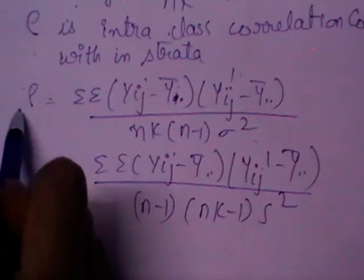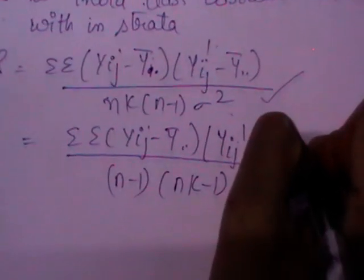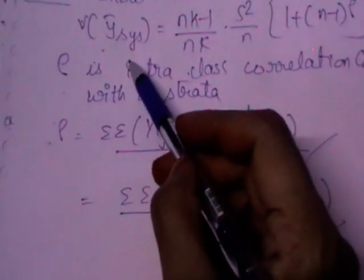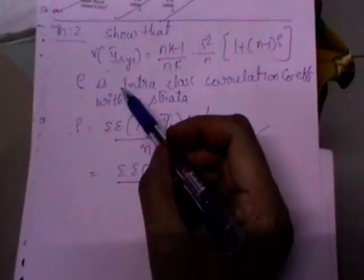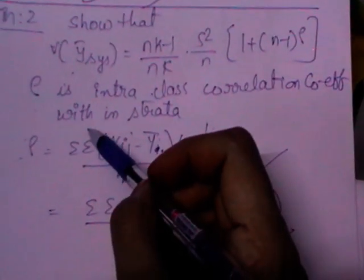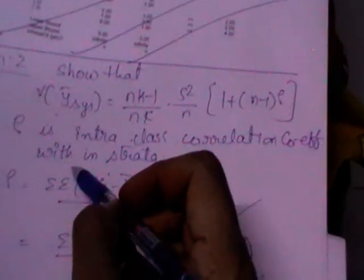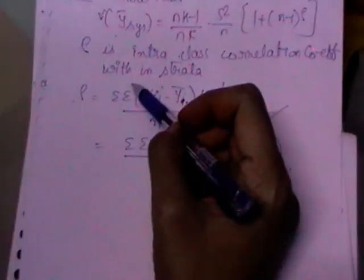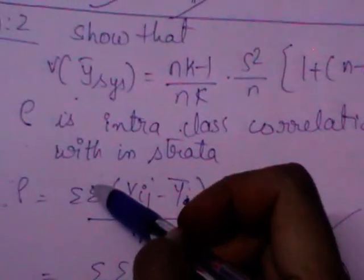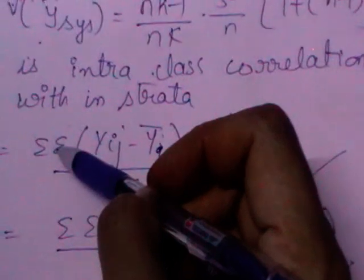ρ has two expressions: one in terms of σ² and one in terms of s². Theorem 1 gives another expression for the variance of ȳ_sys: variance of ȳ_sys = (n - 1)/n · s² - k(n - 1)/N · s²_ws_y. That is the expression for variance of ȳ_sys in terms of s² and s²_ws_y.